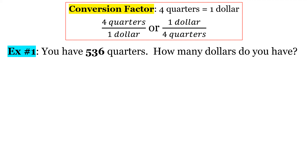In this lesson we're going to be talking about conversions. Let's look at this problem: you have 536 quarters — how many dollars would you have? I've given you these conversion factors up here. We know that there are four quarters in a dollar, or you get one dollar for every four quarters.